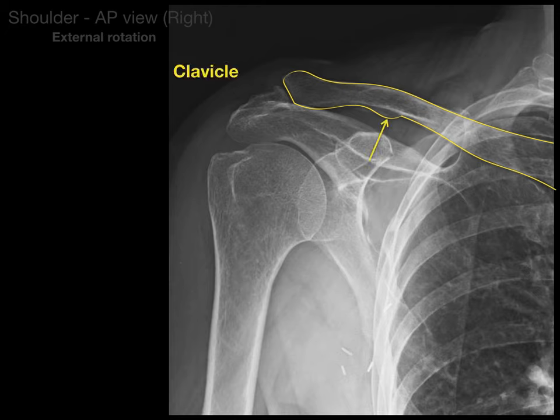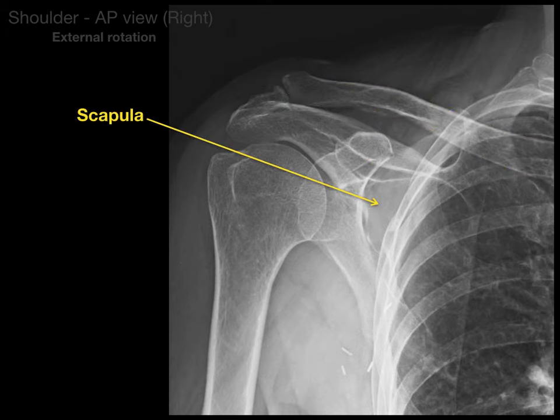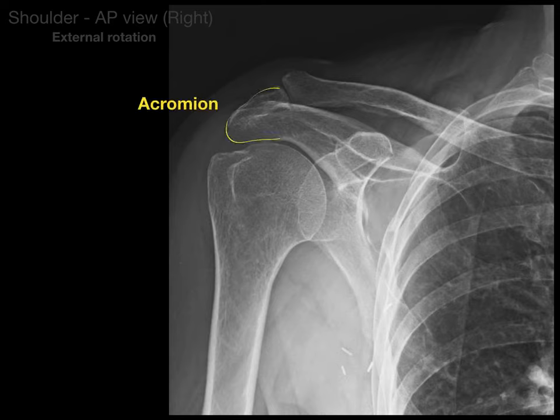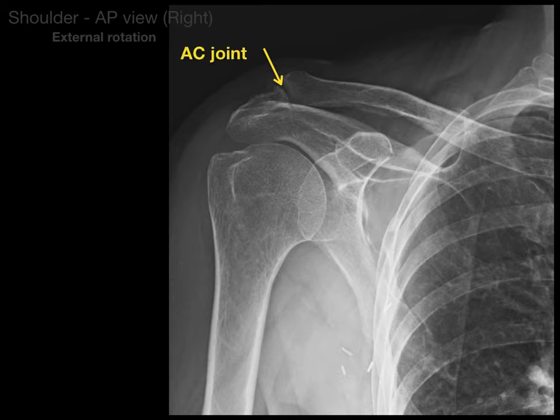That little landmark at the bottom is called the conoid tubercle. Next is the scapula. The acromion forms the point of the shoulder — like the acropolis at the point of a mountain. And the joint between the acromion and the clavicle is called the acromioclavicular joint, or AC joint for short.